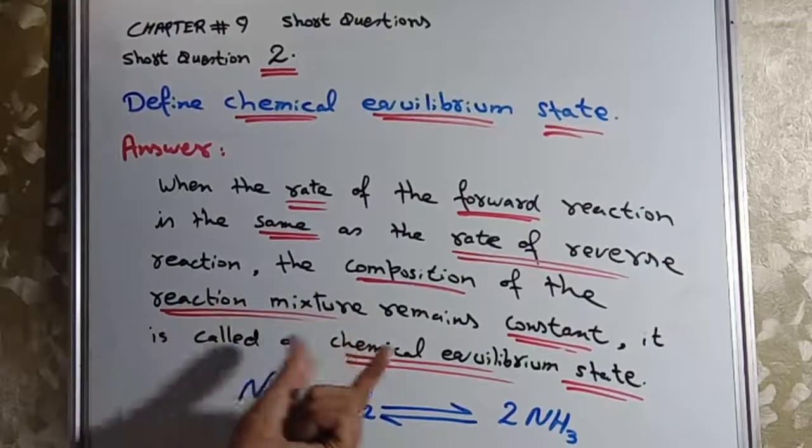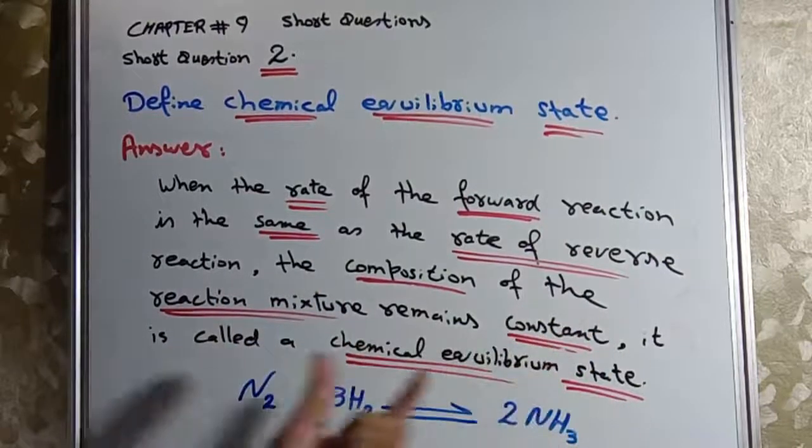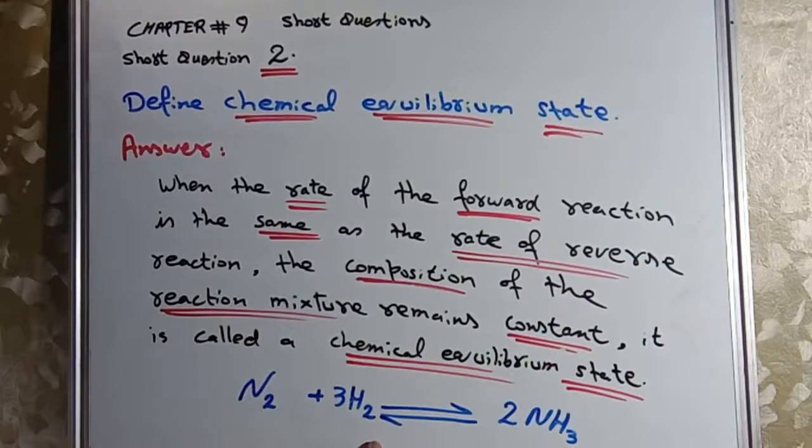Example: nitrogen gas, hydrogen gas, ammonia gas. Rate of forward reaction, rate of reverse reaction same hoti hai to composition constant hai to chemical equilibrium state established hota hai.